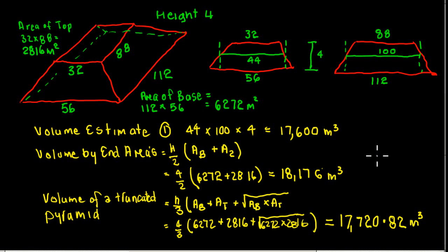And filling in the numbers there, we can see that we get a value there of 17,720.82 cubic meters. I've just put the point 82 in there just to show that it calculates out to that. So there you are, we have three different estimates of the approximate volume of the stockpile there.